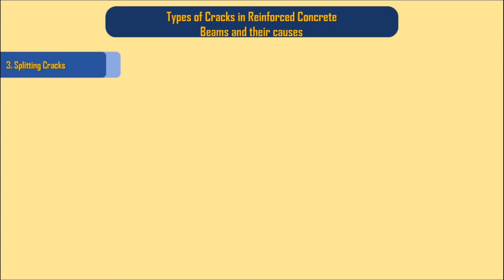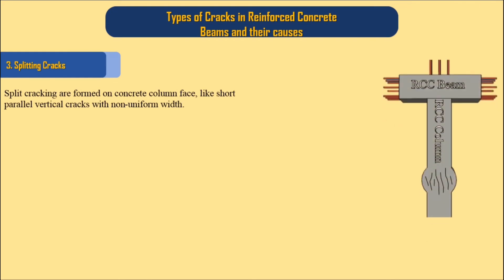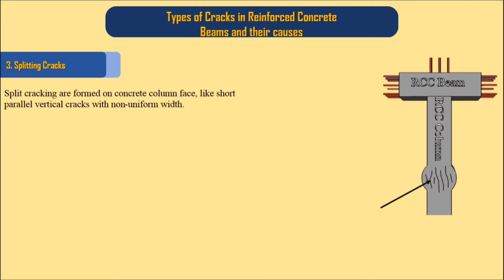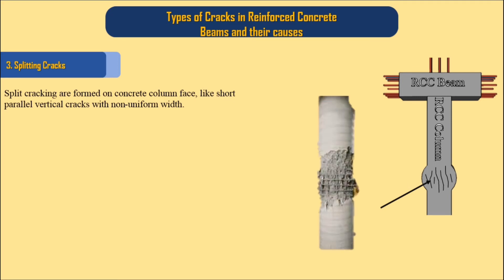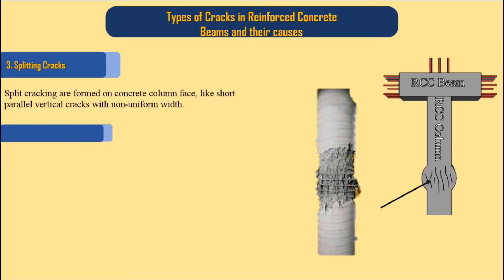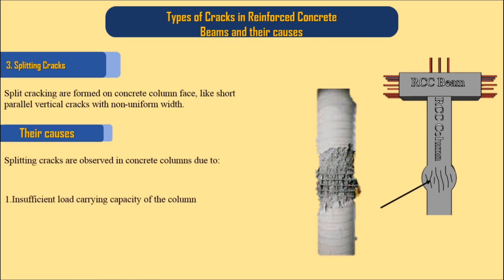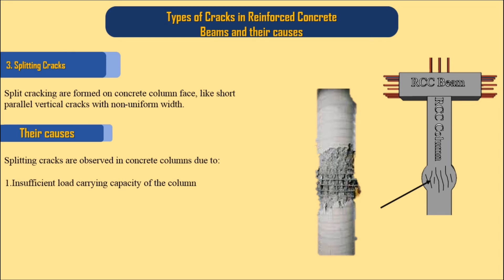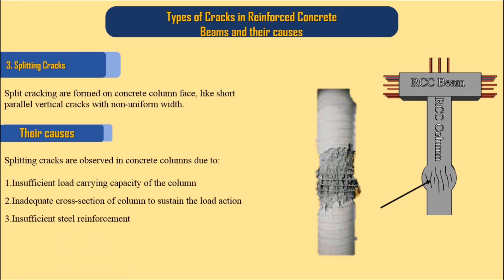3. Splitting Cracks. Split cracking are formed on the concrete column face like short parallel vertical cracks with non-uniform width. Their causes: splitting cracks are observed in concrete columns due to 1. Insufficient load carrying capacity of the column, 2. Inadequate cross section of column to sustain the load action, 3. Insufficient steel reinforcement, 4. Low quality of concrete.